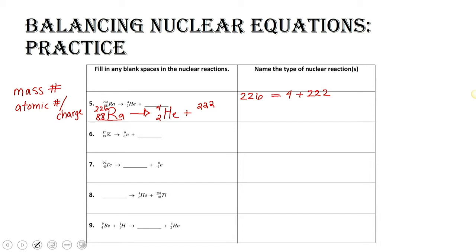Now we look at our atomic number. We've got 88 on our reactant side, and 2 on our product side. They have to be equal, so what added to 2 gives me 88? It's 86. So now we have an atomic number of 86. We look on the periodic table for atomic number 86, and we end up with radon. This is alpha decay — the helium here is an alpha particle. So this is the mass number, and this is the atomic number.